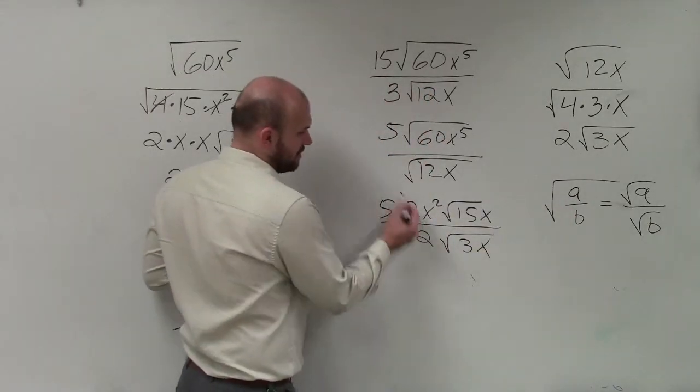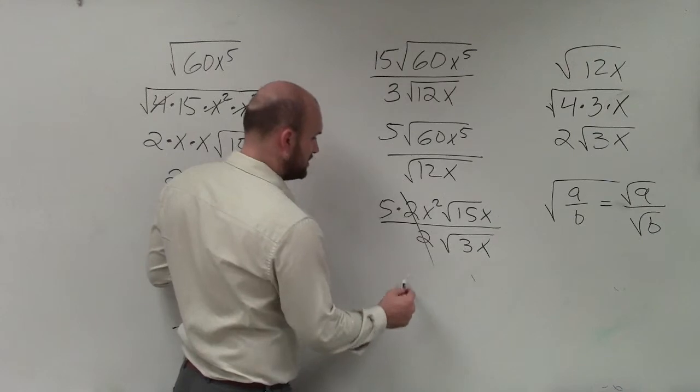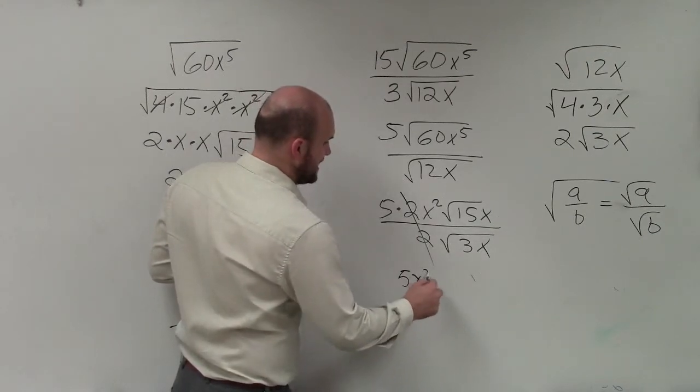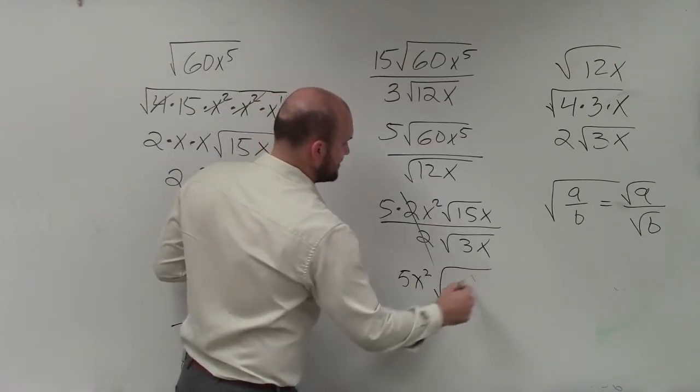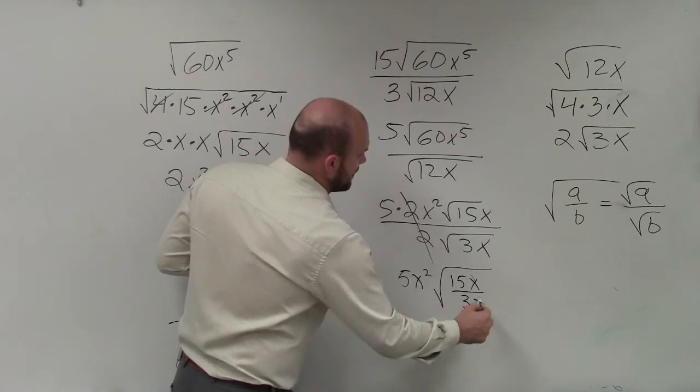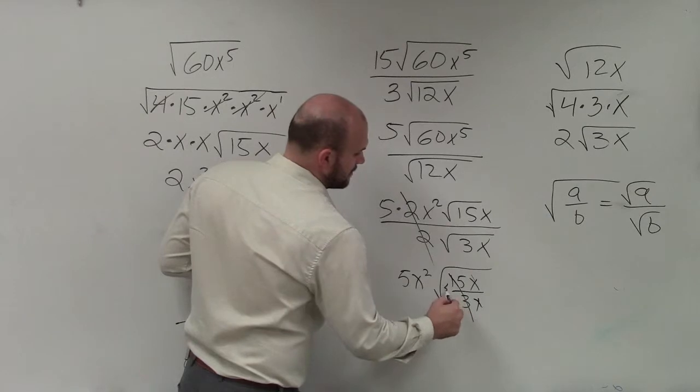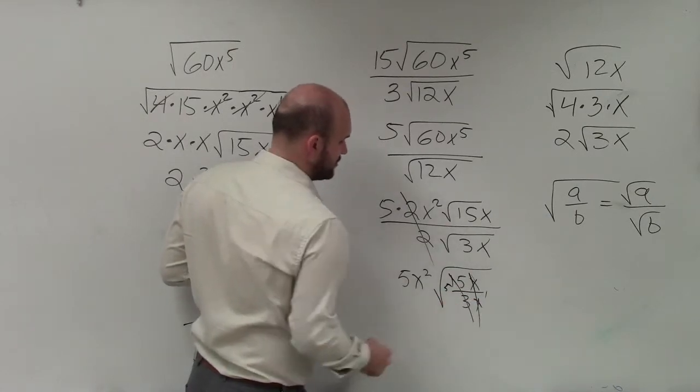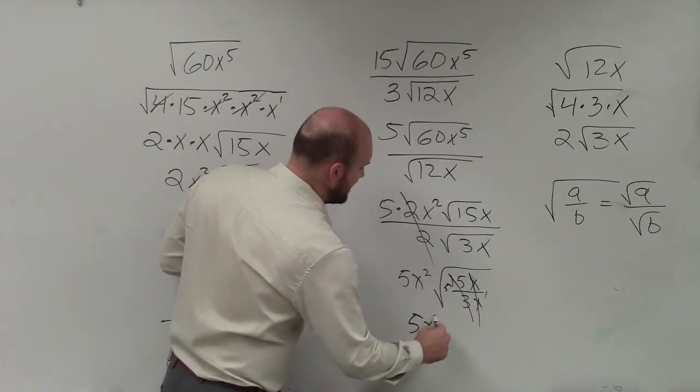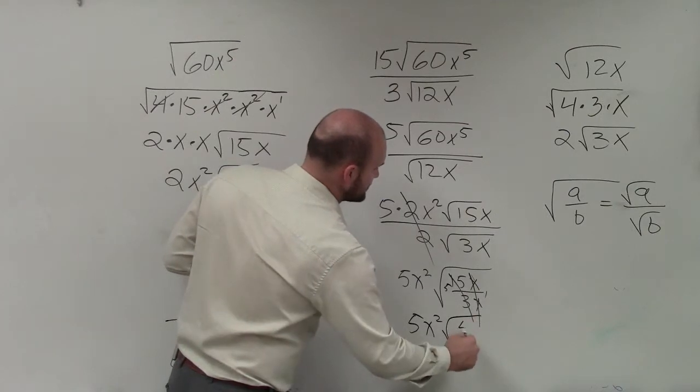So therefore, first of all, I can simplify that. 2 divided by 2 is just 1. So I'm left with 5x squared times the square root of 15x divided by 3x. Well, 15 divided by 3 is 5. And x divided by x goes to 1. So my final answer is 5x squared times the square root of 5.